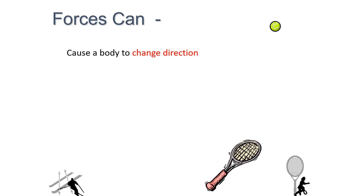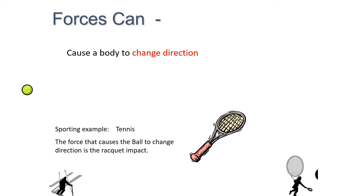Causing a body to change direction. We've got tennis as a prime example. The ball will keep going in the same direction until the racket hits it and changes the direction.